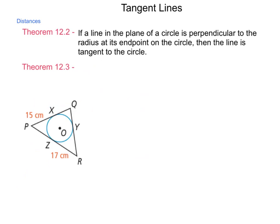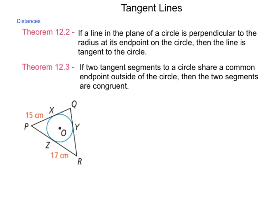Now Theorem 12.3 also goes back to something that we had looked at a little bit previous. It states: if two tangent segments of a circle share a common endpoint outside of the circle, then the two segments are congruent. This is what allowed us to state that that shape in the first set of examples was a rhombus.